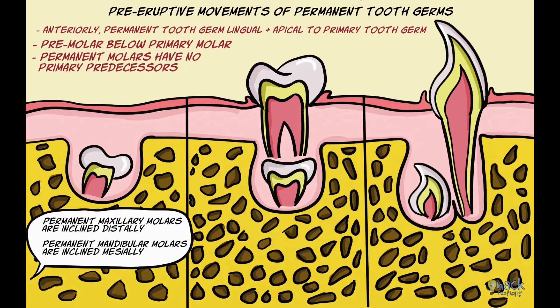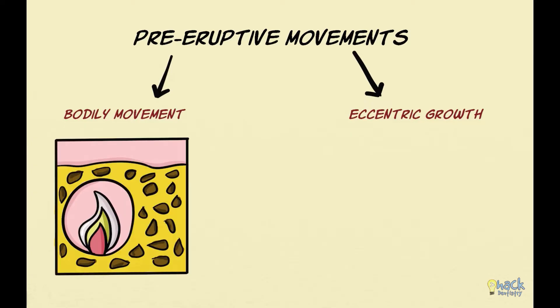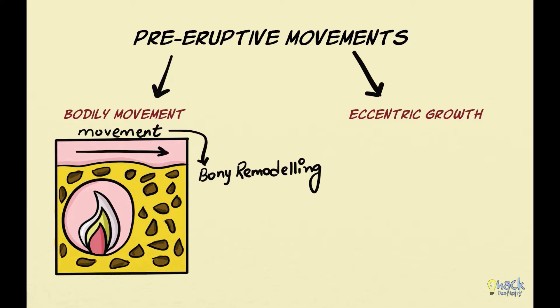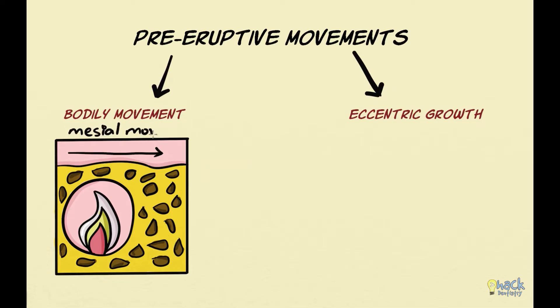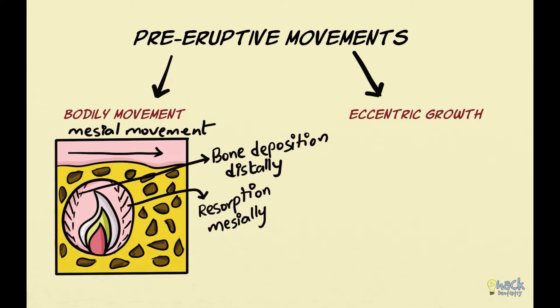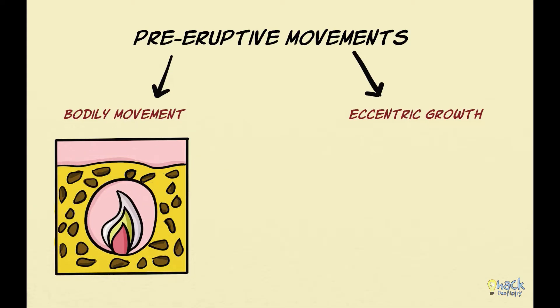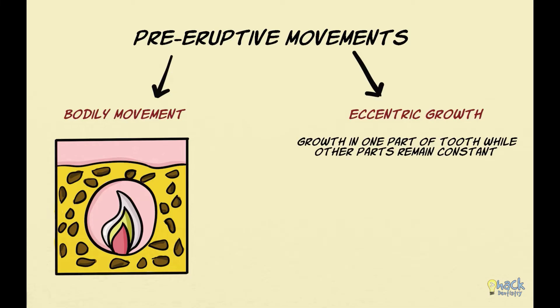Permanent molars are positioned this way for want of space, and when the jaws grow sufficiently, permanent molars are positioned vertically. Pre-eruptive tooth movements are accomplished by bodily movements and eccentric growth. Bodily movement is the movement of the entire tooth germ, and bony remodeling of the crypts helps in this process. For example, if a tooth moves mesially, bone resorption occurs on the mesial surface of the bony crypt and deposition occurs on the distal surface. Eccentric growth is growth in one part of the tooth while the other part remains constant, again accommodated by bony remodeling of the crypt.